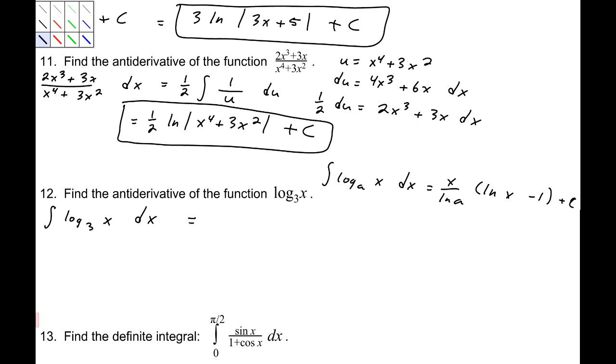Now, we can use that with this. The difference is, our a, in this case, just 3. So, a is 3 in that function. So, this would be x over natural log 3 times natural log x minus 1 plus c. We did not have to use u substitutions, so, we can keep the x where it is. That's it.